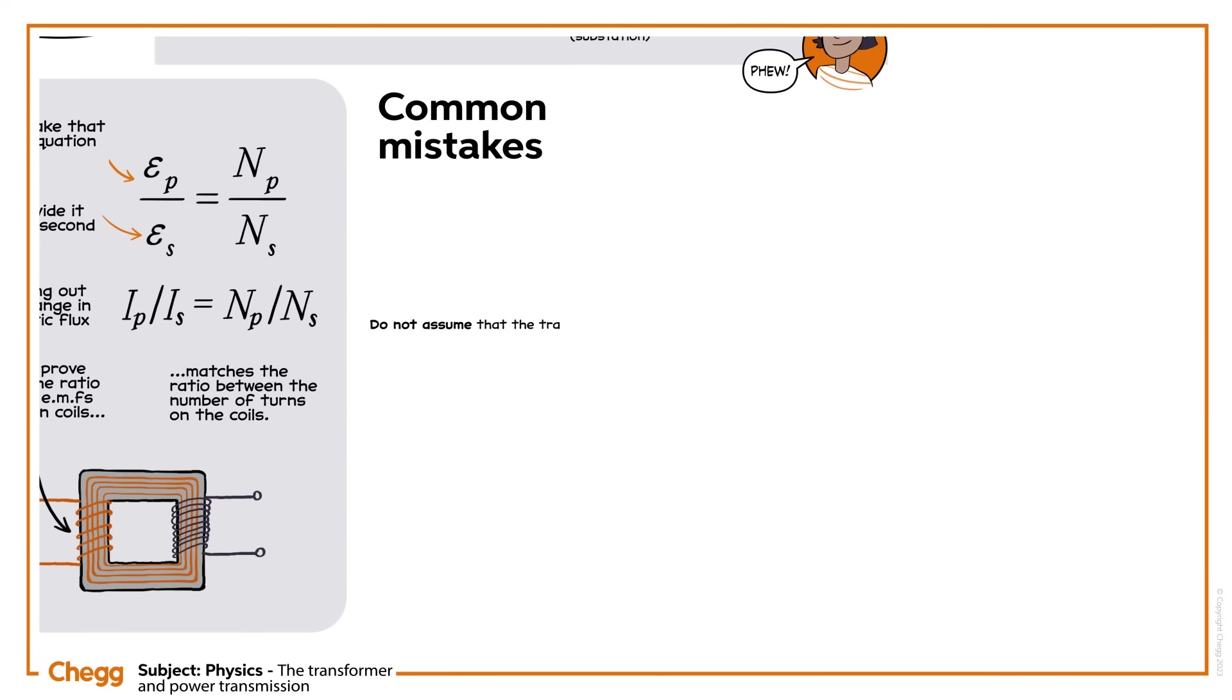Do not assume that transformers can also work with a DC voltage source. They work based on changing magnetic flux, which can only be produced by an AC source.